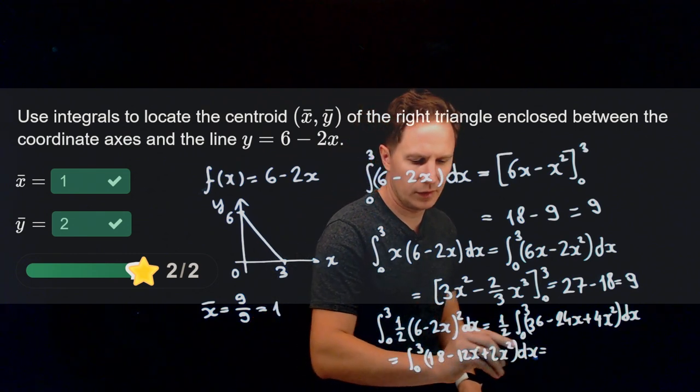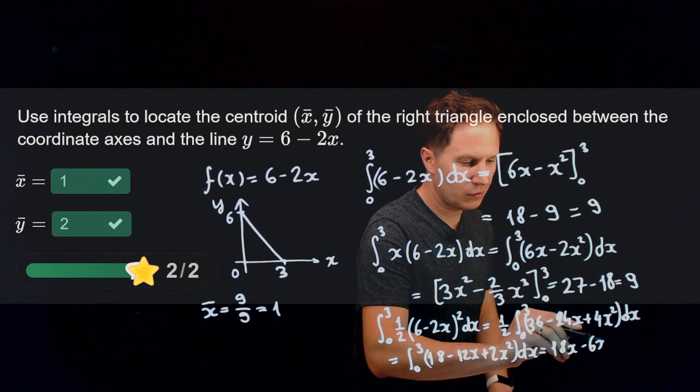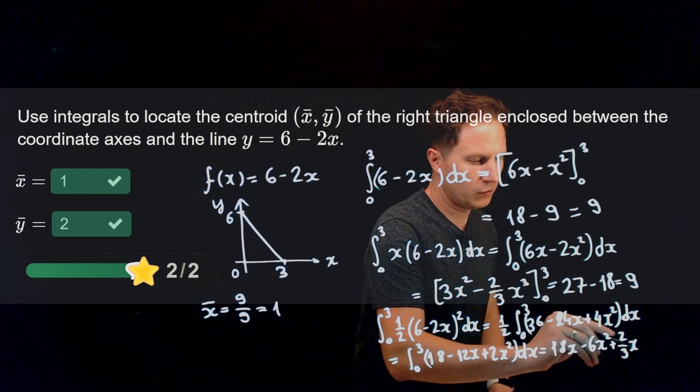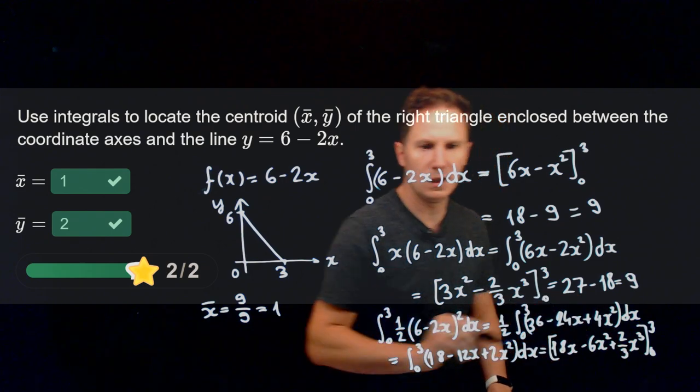An antiderivative for that is 18x minus 6x squared plus 2 thirds of x cubed, and as x changes from 0 to 3, we need to evaluate this.